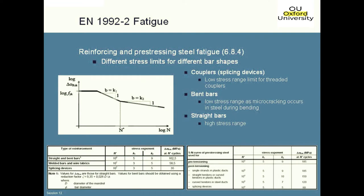The table here gives you the values of N*, K1, and K2 for different types of detail. There are requirements for straight and bent bars — you get the stress limit for a bent bar by applying a reduction factor, which is a function of the mandrel diameter that you've bent the bar around. To give you an idea of the effect: starting with a completely straight bar, at 10^6 cycles we have a resisting stress range of 163 MPa. If we bend the reinforcement down to the minimum mandrel diameter allowed and apply the reduction factor, that drops down to something just under half — so it's quite significant.